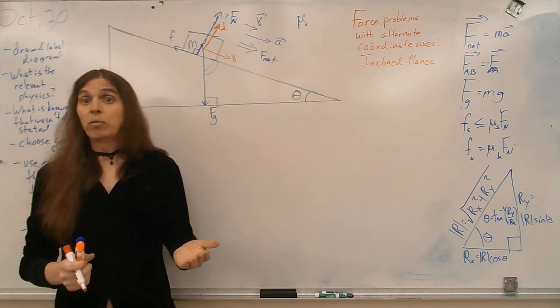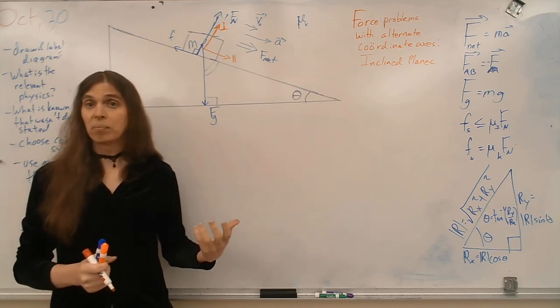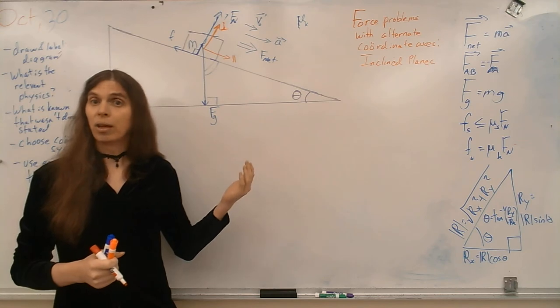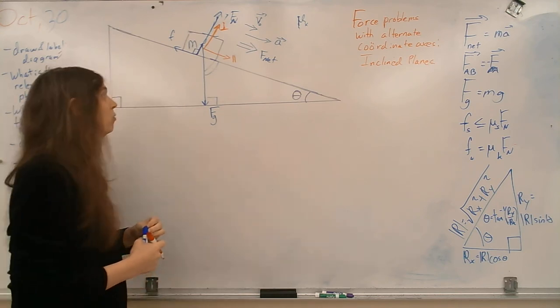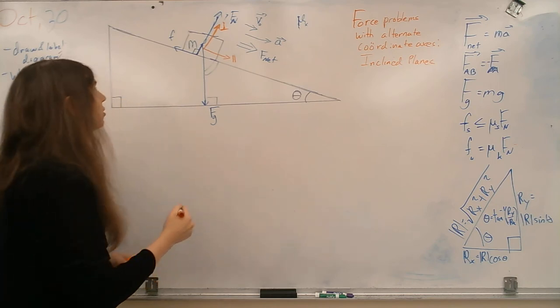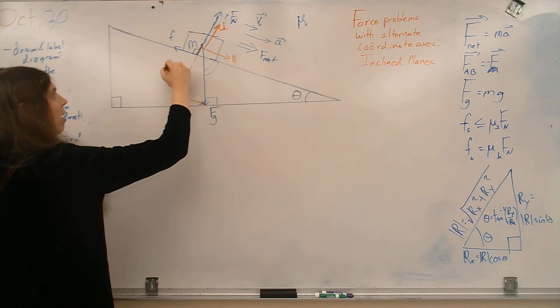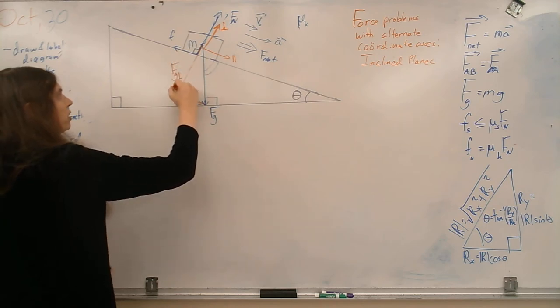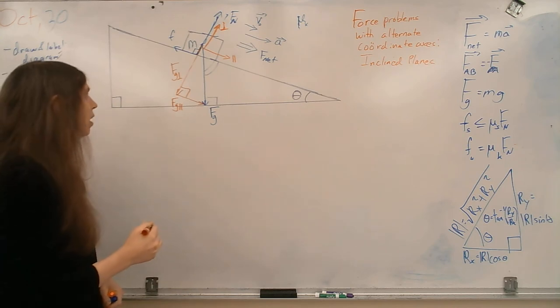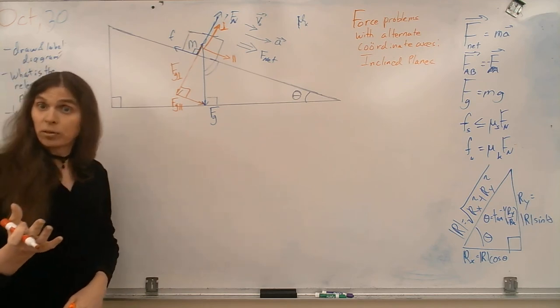So, when we're dealing with vectors, and we've identified all of the vector quantities in our system, we want to then break up any vectors into components that correspond to those axes. And the only vector that's not aligned with any of these axes is our weight. So, we'll break that up into components. And so, we'll declare components for that. We're going to have a perpendicular to the slope and a parallel to the slope component for our weight.